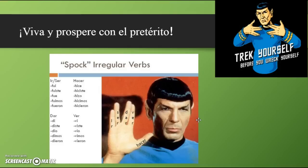Those are our five irregular preterite verbs. We call these SPOC verbs. Ir and ser together are our twin verbs: fui, fuiste, fue, fuimos, fuisteis, fueron — conjugating identically. Dar and ver are our rhymers: di, diste, dio, dimos, disteis, dieron — and vi, viste, vio, vimos, visteis, vieron. Y finalmente, in a category of its own on the thumb is hacer — an I verb, and an introduction to a category we'll learn more about later in Spanish. Excelente estudiantes, vive y prospere con el pretérito. Adiós.